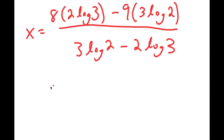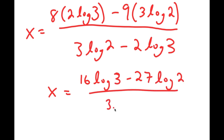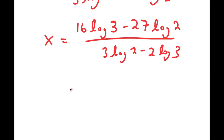Now, 8 times 2 is 16 and 9 times 3 is 27, so I get x equals 16 times log 3 minus 27 times log 2 over 3 log 2 minus 2 log 3. And all of this is equal to approximately 9.6548.